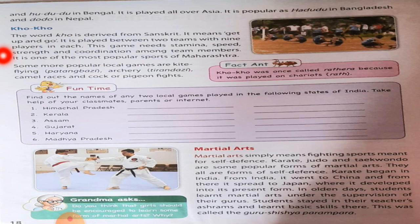It is one of the most popular sports of Maharashtra. So, we understood from this paragraph that the word Kho of Kho Kho game is taken from the Sanskrit language which means get up and go. It is played between two teams with nine players in each. It requires stamina, speed, strength, and coordination among players.